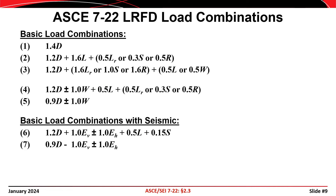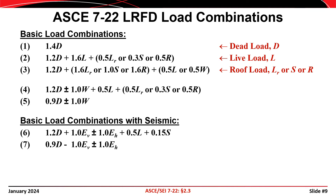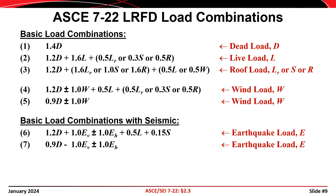To reinforce the general approach, in each load combination we consider a permanent load, a primary load acting at its maximum lifetime level, and companion loads acting at their arbitrary point in time levels. In combination one, dead load is the primary load. In combination two, live load is primary. In combination three, the roof loads are primary. In combinations four and five, wind load is primary. In combinations six and seven, earthquake loads are primary. Dead loads, live loads, roof loads, and rain loads are calculated at their arbitrary point in time levels, while snow loads, wind loads, and earthquake loads are calculated at their maximum lifetime levels.